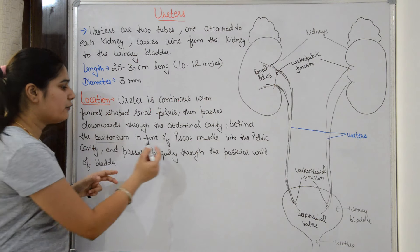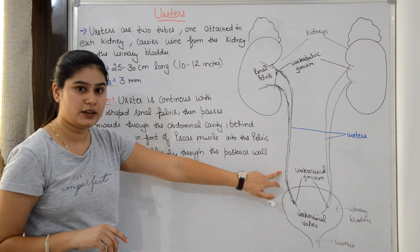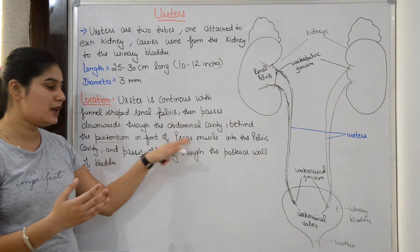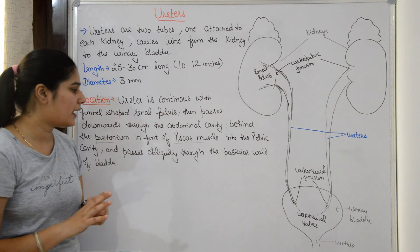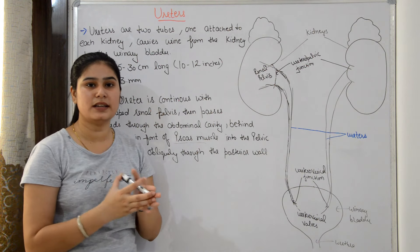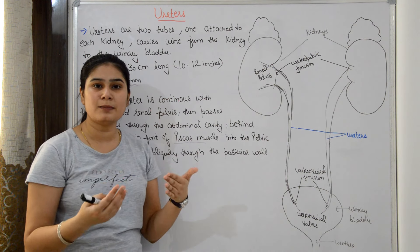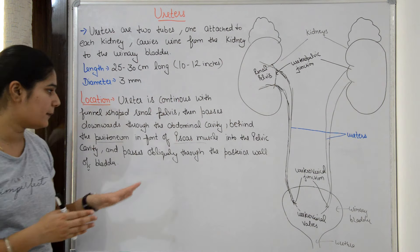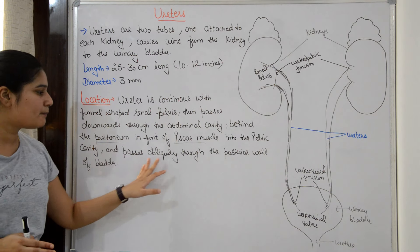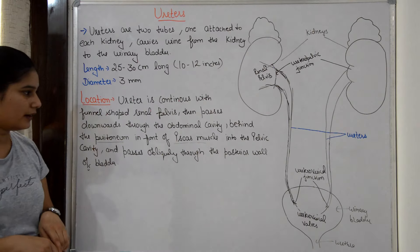The ureter runs in front of the psoas muscle. The psoas muscle is present in the lower lumbar region and helps with walking and hip flexion. The ureter passes in front of the psoas muscle into the pelvic cavity, and then passes obliquely through the posterior wall of the bladder.